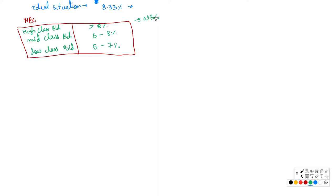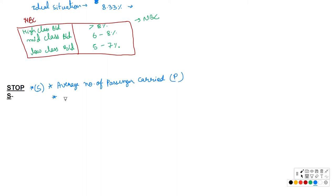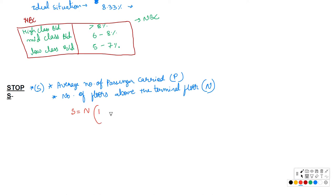Next is the probable number of stops of a lift car. This depends on the average number of passengers carried (P) and the number of floors. The formula for stops S is: S = N × [1 − (1 − 1/N)^P], where N is the total number of floors of the building.